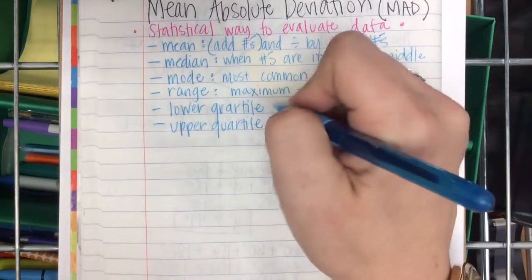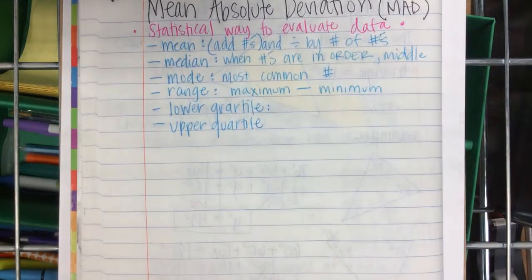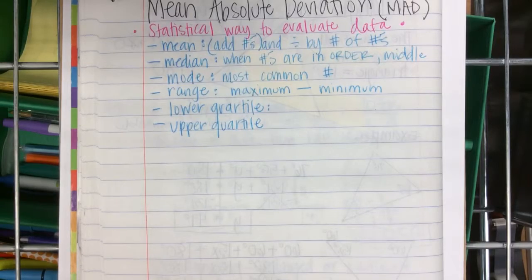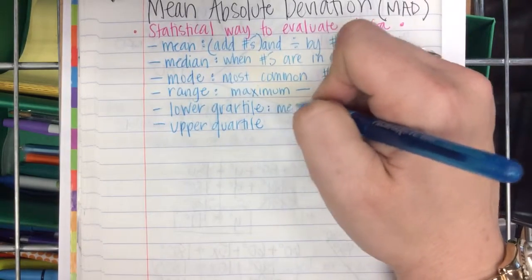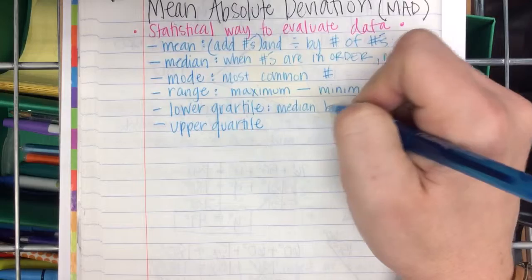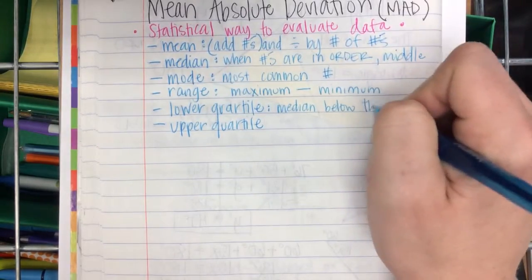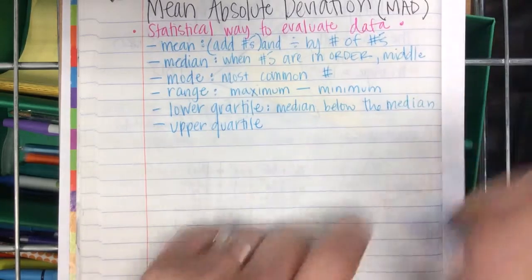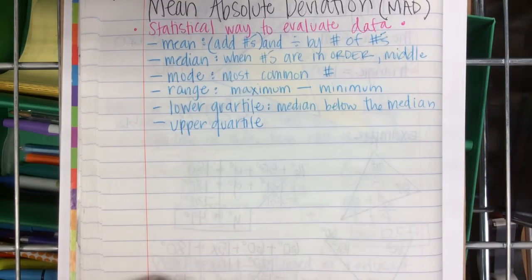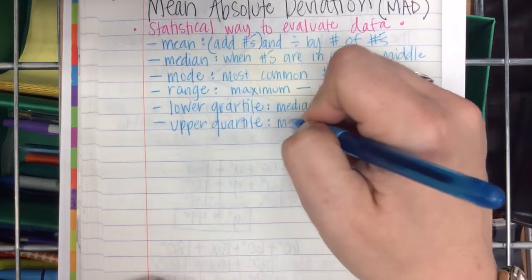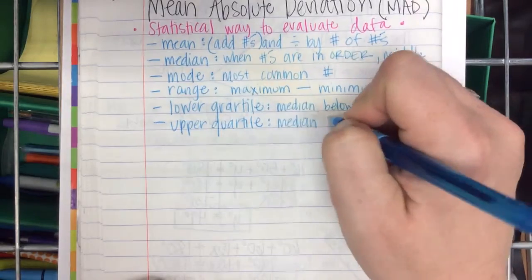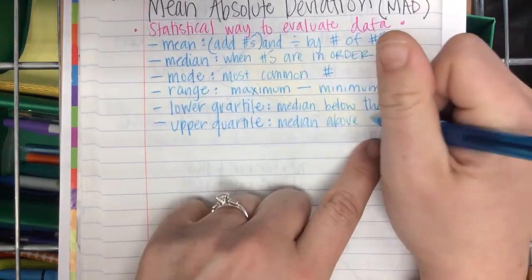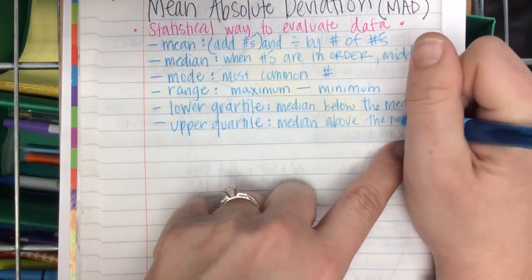The lower quartile is the median below the median. And the upper quartile is the median above the median.